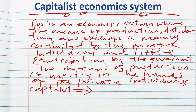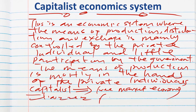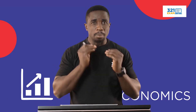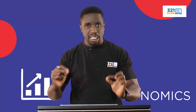The capitalist economy could also be referred to as a free market economy, a market economy, or a laissez-faire economy. It is an economic system whereby the means of production and distribution is being handled majorly by the private individual.